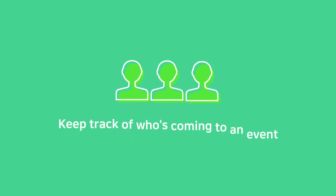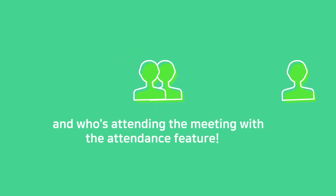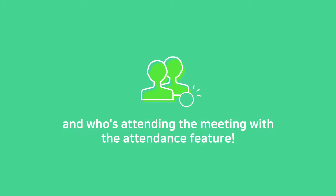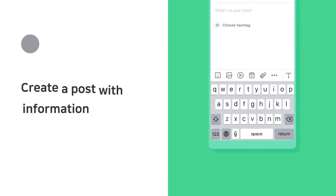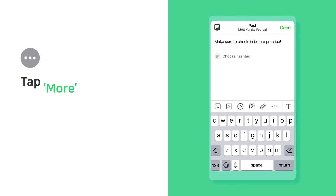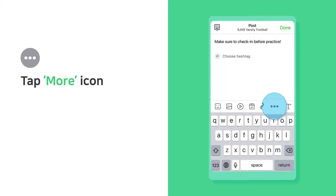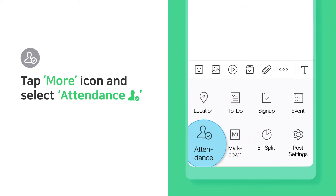Keep track of who's coming to an event and who's attending a meeting with the attendance feature. Create a post with information, then tap the More icon and select Attendance.